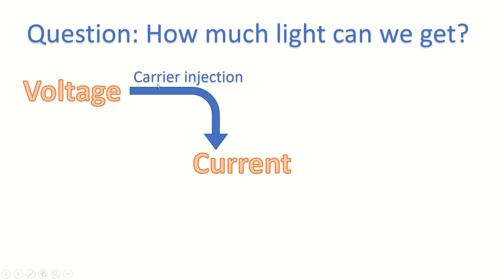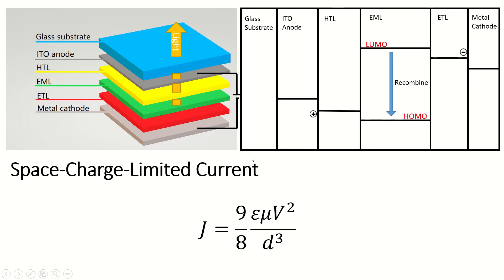After the carriers are injected, we now need to calculate how much current, I mean electrons, are transported in the device. When charges flow into the organic film, the conduction system changes from ohmic to space charge-limited current.